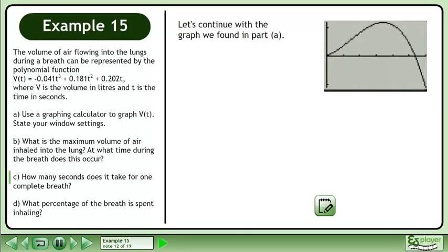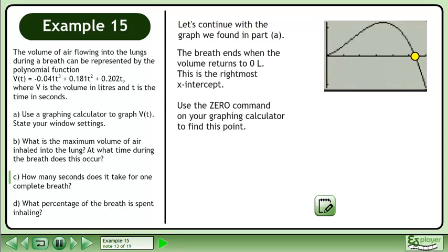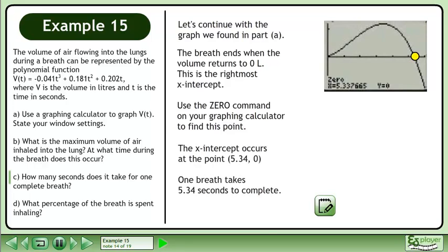Let's continue with the graph we found in Part A. The breath ends when the volume returns to 0 liters. This is the rightmost x-intercept. Use the zero command on your graphing calculator to find this point. The x-intercept occurs at the point 5.34, 0.